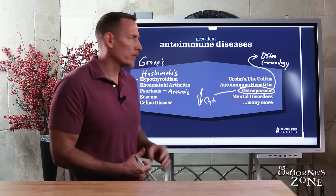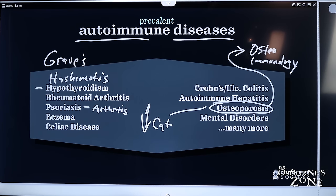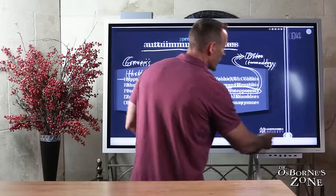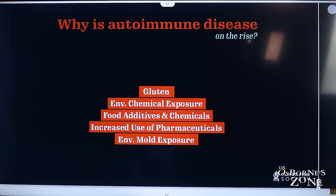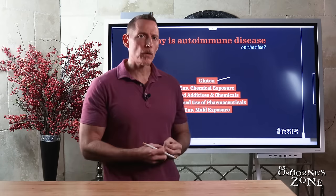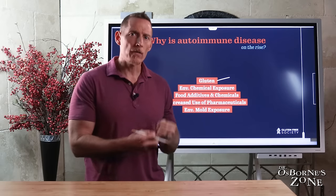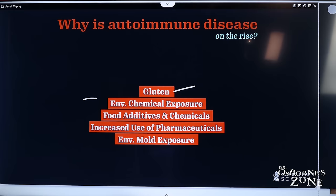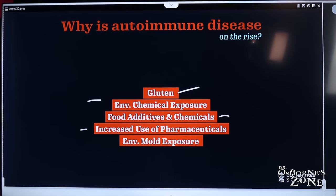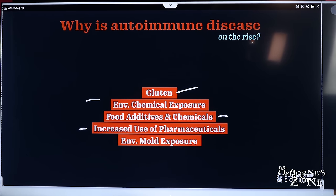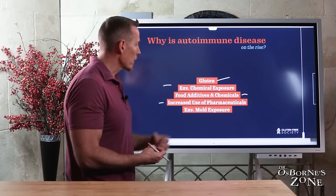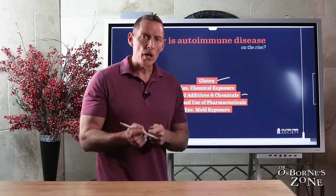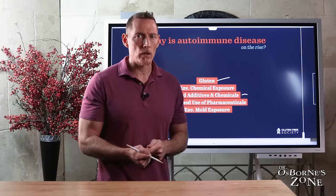There are approximately 140 different forms of autoimmunity. We're talking about how candida and yeast can drive this process. Other reasons why autoimmune disease is on the rise include gluten — with 50% of U.S. calories from wheat, gluten consumption is rising. As covered in the book No Grain, No Pain, there's a strong linkage between gluten and autoimmunity. We also have environmental chemical exposures, food additives, increased pharmaceutical use including antibiotics, steroids, and anti-inflammatories, and environmental mold exposure.